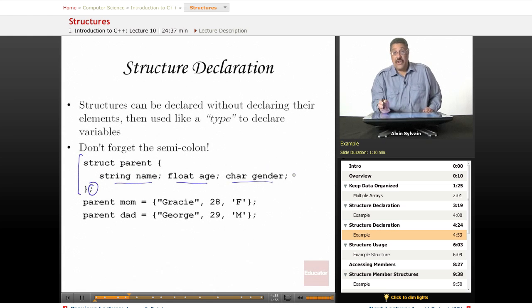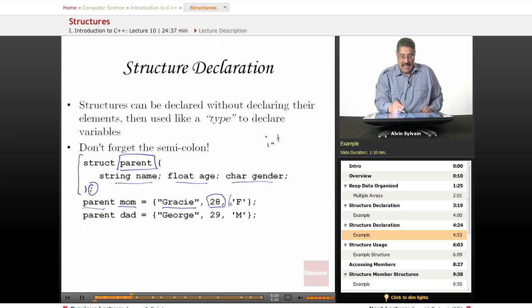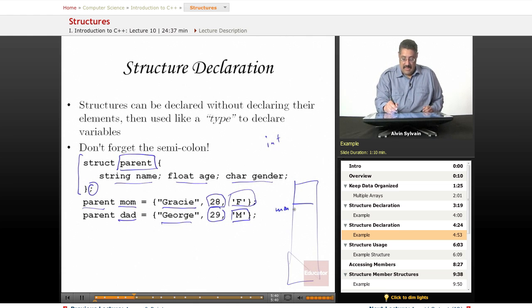Here we have a parent structure with name, age, and gender. Now we can use parent like a type instead of being integer, double, or char. We can say parent and have a variable mom who is a parent, initialized with mom's name Gracie, age 29, and gender female. Then dad whose name is George, age 29, and is male. So now we've got two variables.